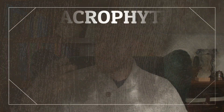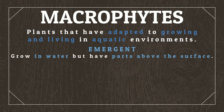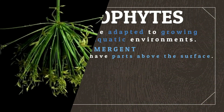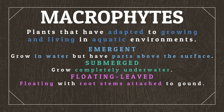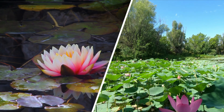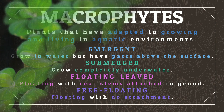Within wetlands, especially the nutrient-rich swamps and marshes, a variety of plant life can thrive, with the most common being macrophytes — plants that have adapted to growing in aquatic environments. We separate macrophytes into four categories. Emergent macrophytes grow in water but have parts above the surface exposed to air, such as papyrus and wild rice. Submerged macrophytes grow completely underwater, though often have segments above water while their growing buds are below the surface, such as reeds and cattails. Floating-leaved macrophytes have root stems attached to the bottom with leaves that float on the surface — the most iconic being water lilies. Finally, free-floating macrophytes float on the surface with no attachment to the ground, such as water lettuce.